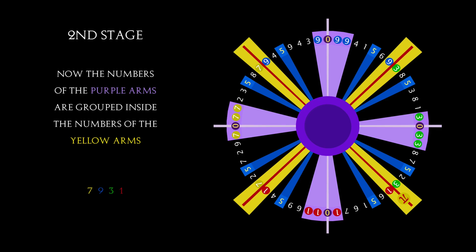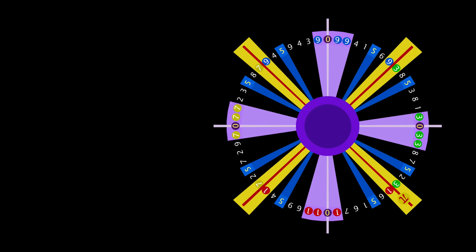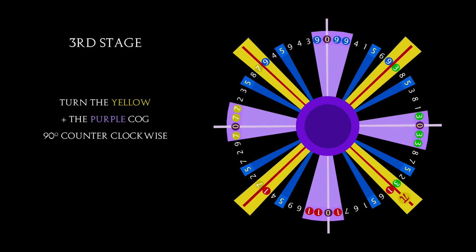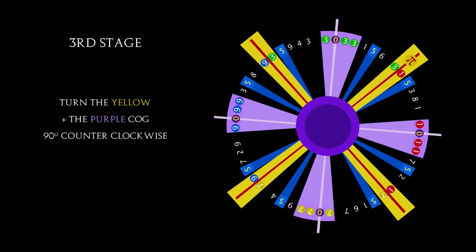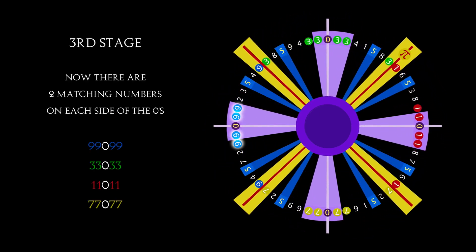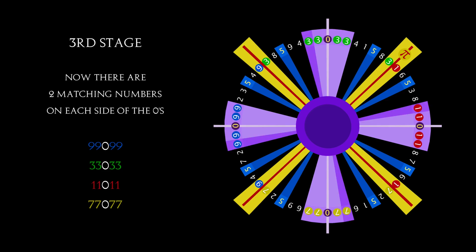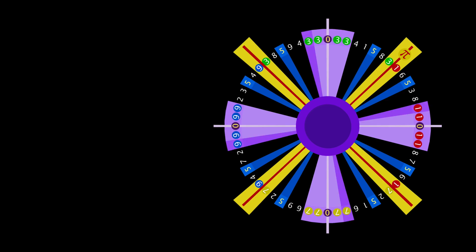Now, the numbers of the purple arms are grouped inside the numbers of the yellow arms: the sevens, the nines, the threes, and the ones. Turn both arms 90 degrees counter-clockwise. Now the numbers surrounding the zeros are balanced. This complements the first cog of the mechanism.